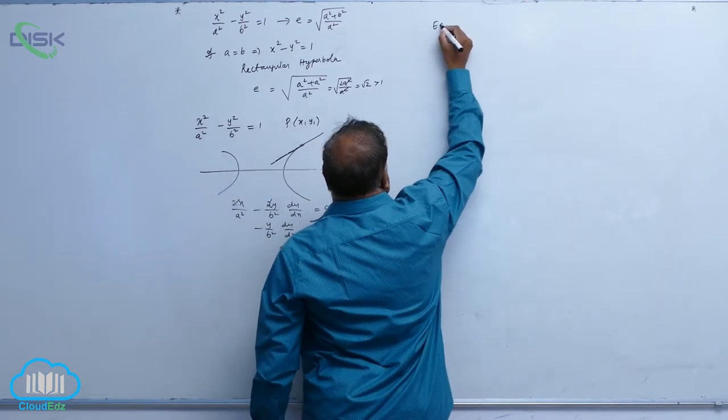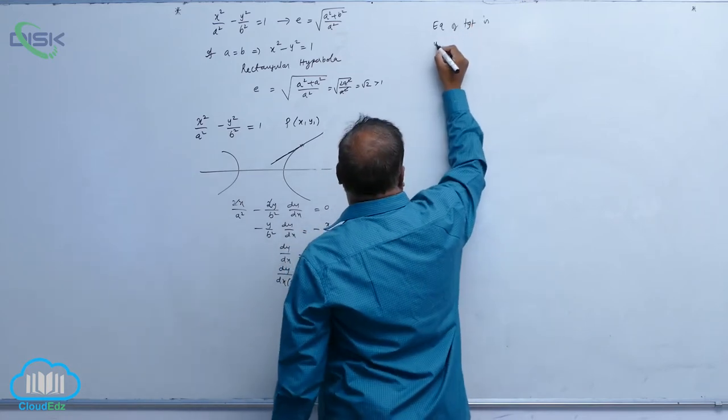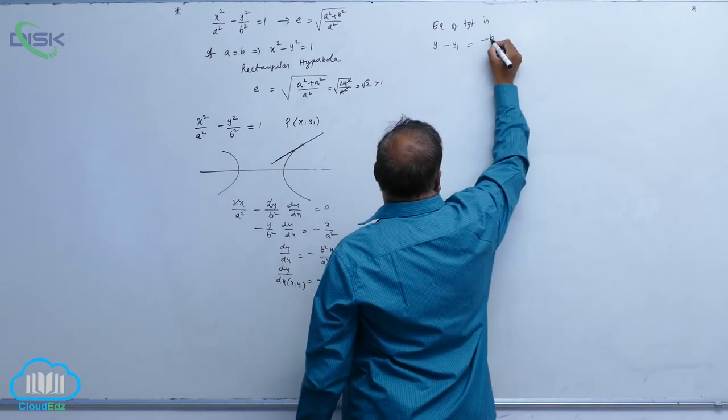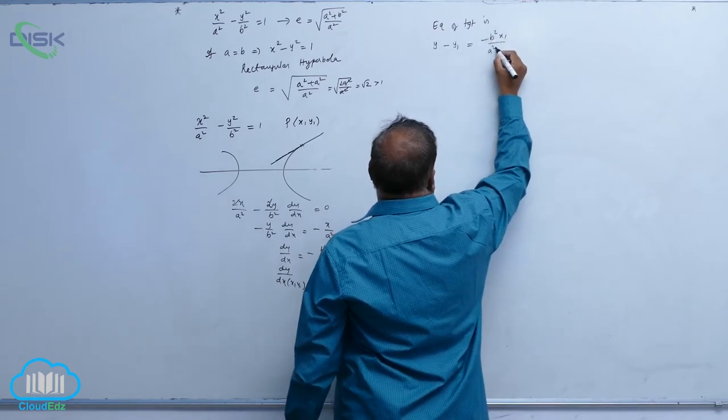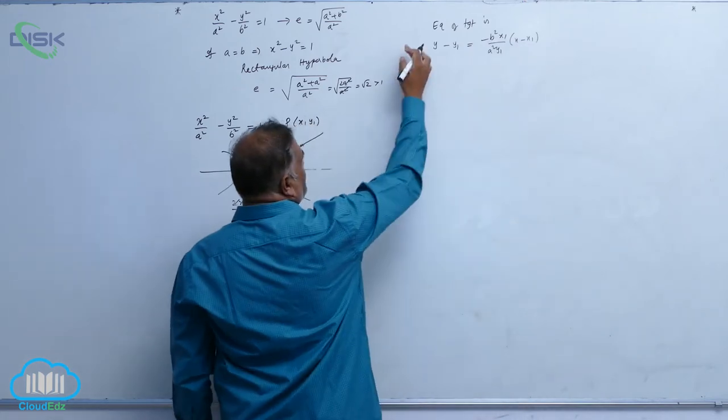Let us write equation of tangent is, you know that y minus y1 is equal to minus b square x1 by a square y1 into x minus x1 cross multiplication.